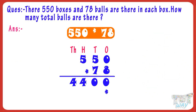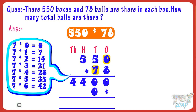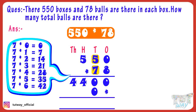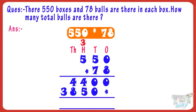Now put a multiplication sign below the 1's place digit of the product. Now multiply 550 with the 10's digit of 78, that is 7. 7 multiplied by 0 equals 0. Write 0 in the product starting from 10's place. 7 multiplied by 5 equals 35. Write 5 in the product. 7 multiplied by 5 equals 35, plus 3 carry equals 38. Write 38 in the product.